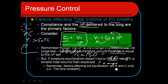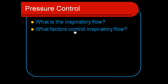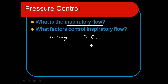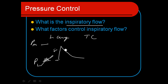Factors that affect inspiratory flow come back to the time constant and lung characteristics. Inspiratory flow is controlled by lung characteristics — when there is a large pressure gradient between mouth pressure and lung pressure, flow occurs. As the pressure gradient decreases and the lungs fill, flow naturally declines. So in pressure control ventilation we get a naturally decelerating flow waveform, controlled by the compliance and resistance of the lungs.